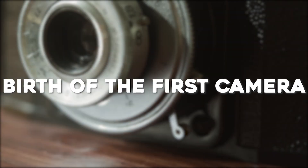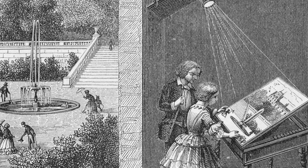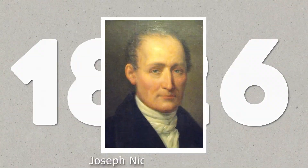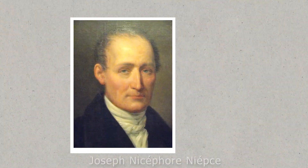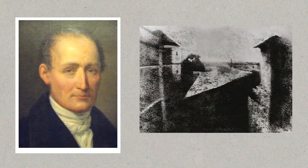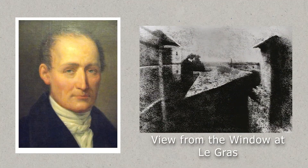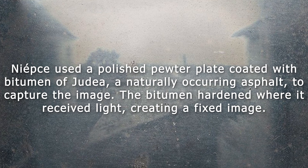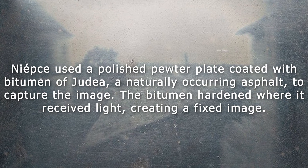Birth of the First Camera. After years of experimentation with the Camera Obscura, a massive breakthrough was finally made in 1826 by Joseph Nicéphore Niépce. The French inventor achieved a major breakthrough by creating the world's first permanent photograph, known as 'View from the Window at Le Gras.' Niépce used a polished pewter plate coated with bitumen of Judea, a naturally occurring asphalt, to capture the image. The bitumen hardened where it received light, creating a fixed image. Although the exposure time was exceedingly long — about eight hours — this experiment was the first of many that would lead to major advancements in photography.